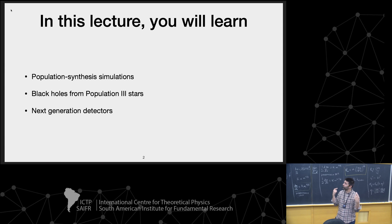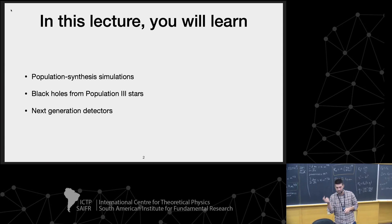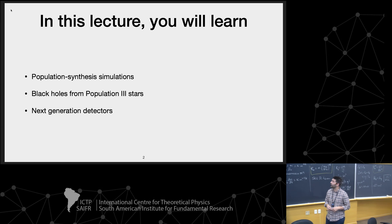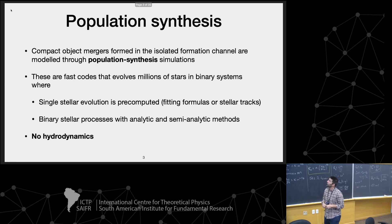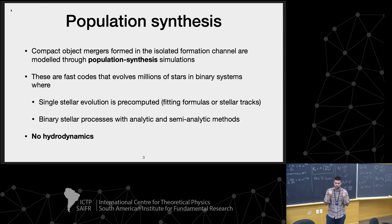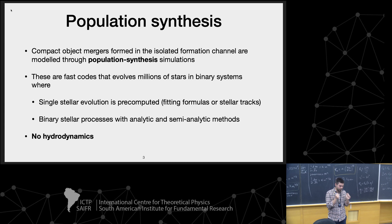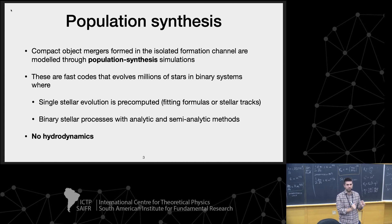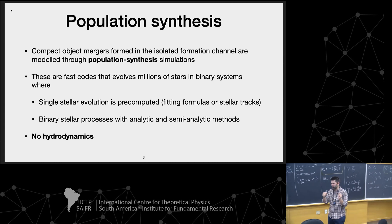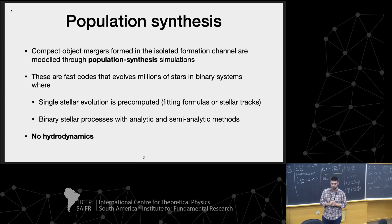This is going to be an excuse to introduce next generation detectors, so the Einstein telescope and so on. Definition of population synthesis: population synthesis is the place where we implement the physics that drive the isolated formation channel. For example, mass transfer, common envelope — things that we already discussed. The place where we implement this physics is population synthesis simulations.